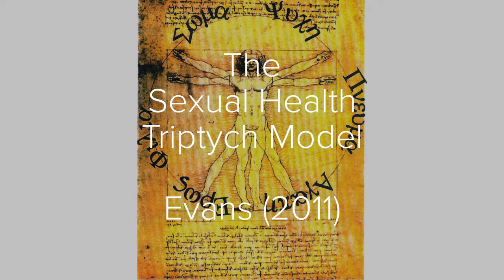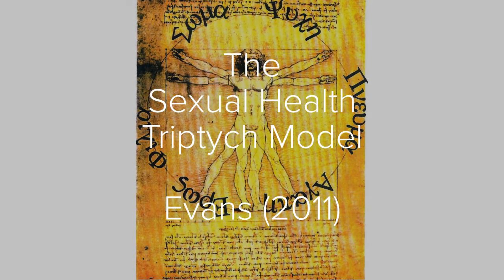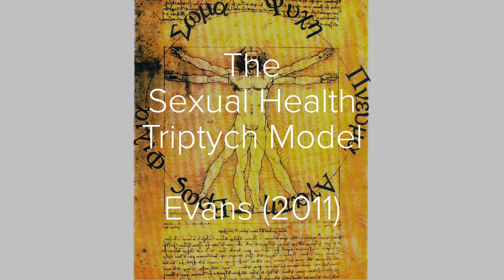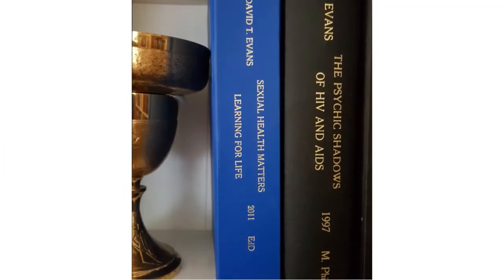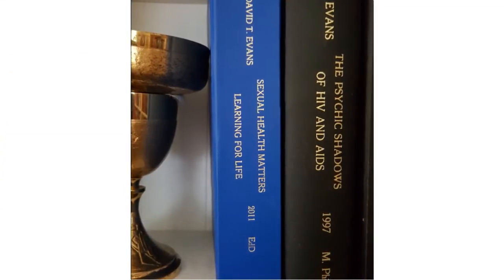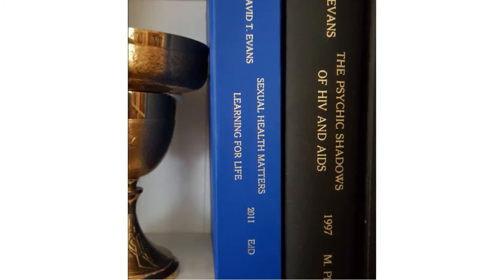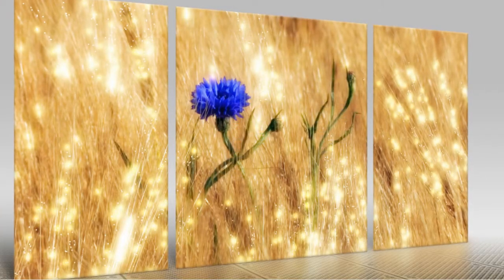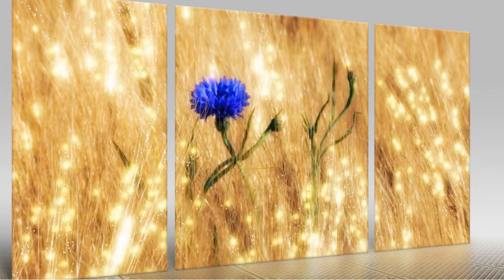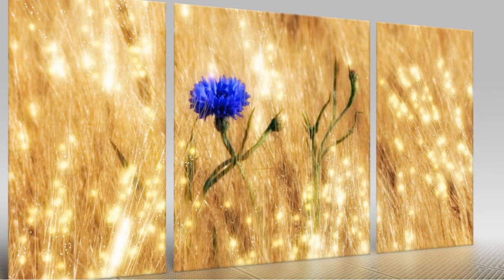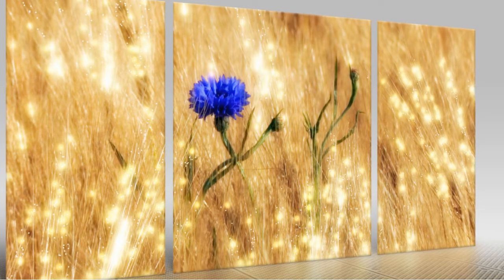Welcome to this brief video which gives an overview of the sexual health triptych model, a model I designed as part of my doctoral studies back in 2011. The doctorate was called 'Sexual Health Matters: Learning for Life' and it was research that mapped across sexual health client need compared to the educational preparedness of nurses throughout England. The word triptych comes from the Greek for three panels and as I was exploring the data from the respondents in my research, I found that they were referring to sexual health in three particular ways.